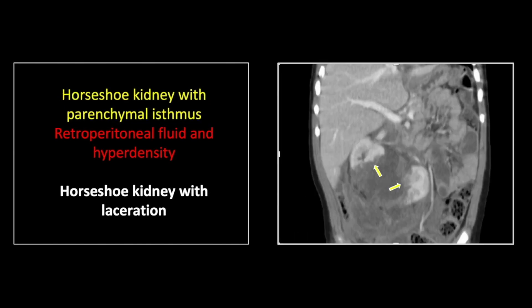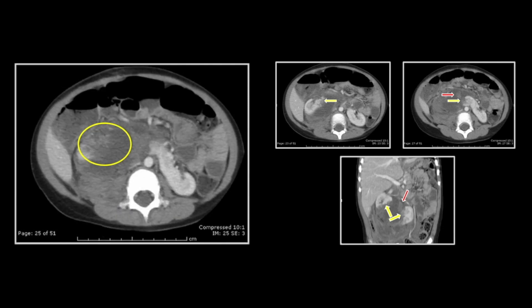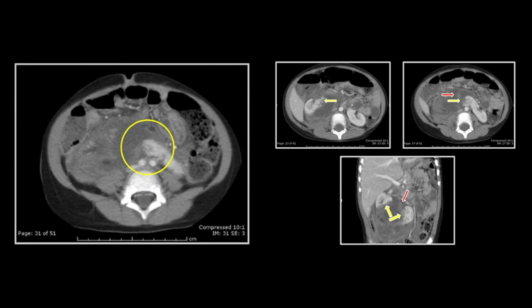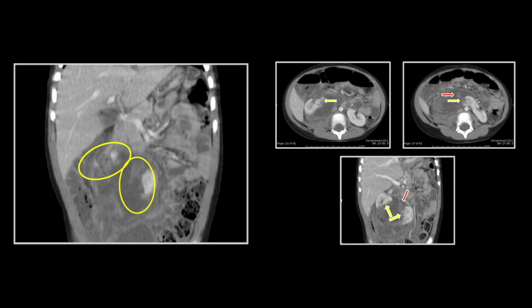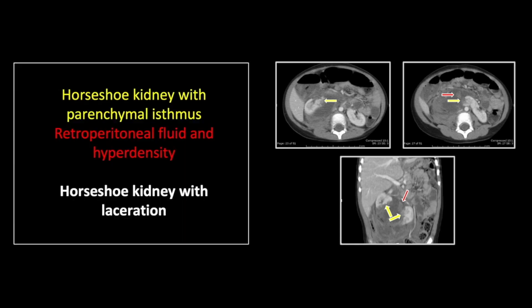This is probably better appreciated on the coronal, where you see the irregular sheared aspects of that parenchymal isthmus and a large internephric fluid collection with clot. There is that sheared surface of the inferior right kidney and that of the left — note again that blush of density along those irregular surfaces. So that is a horseshoe kidney with laceration of its parenchymal isthmus.